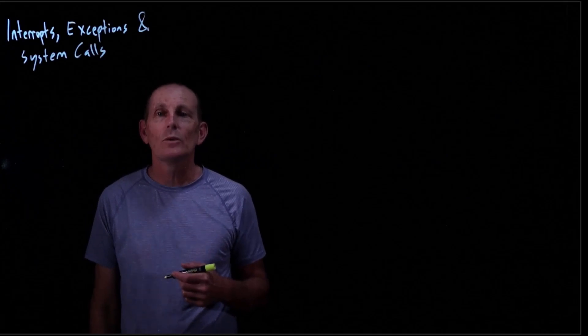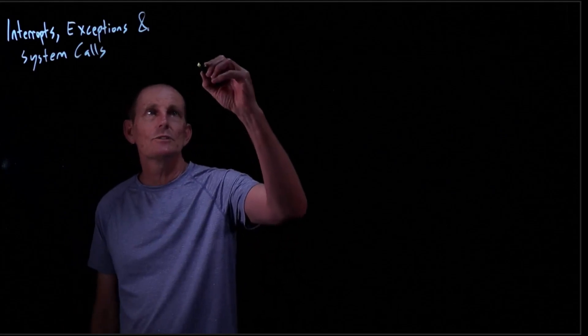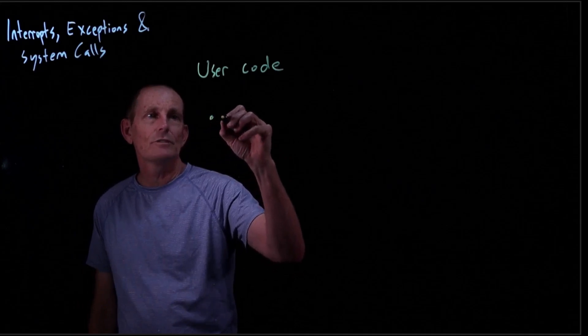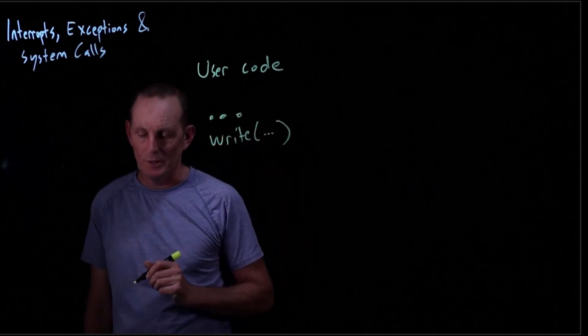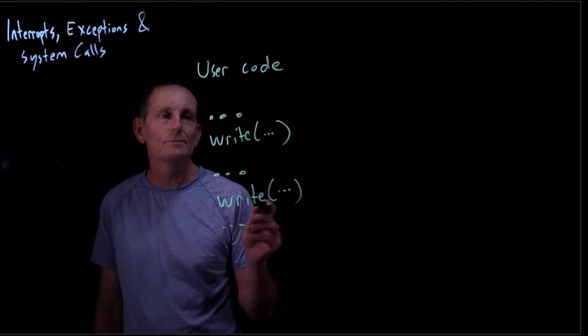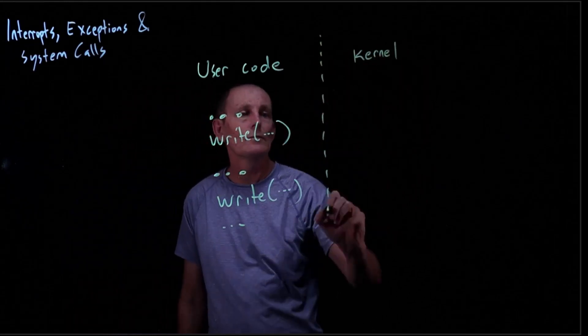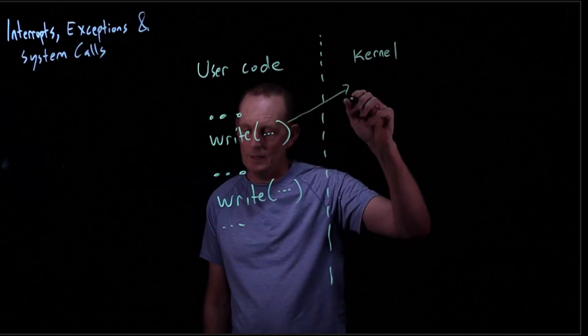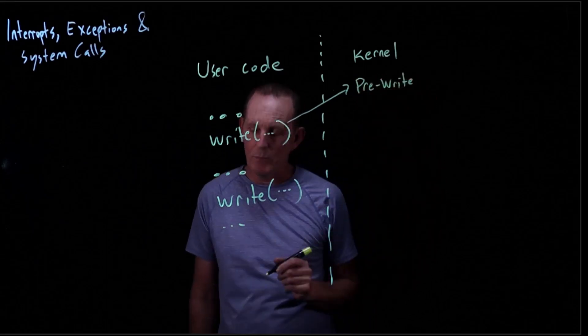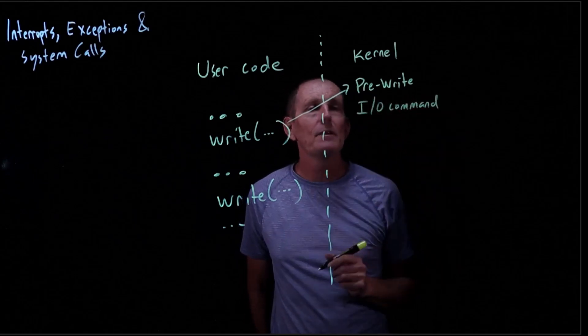Let's look at what happens when user code is making a system call to the kernel to do a write. We've got some user code that will be doing some stuff, then issuing a write, then doing some more stuff, then issuing another write call. What happens on the write call? This is going to go into the kernel.